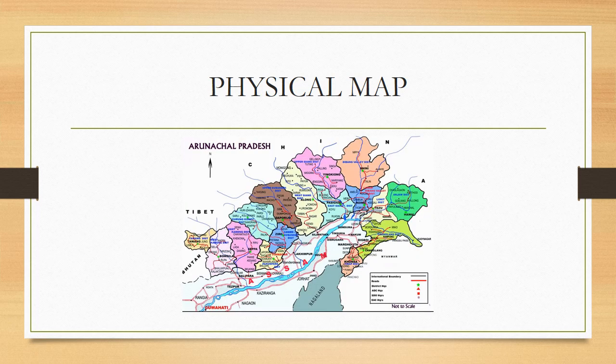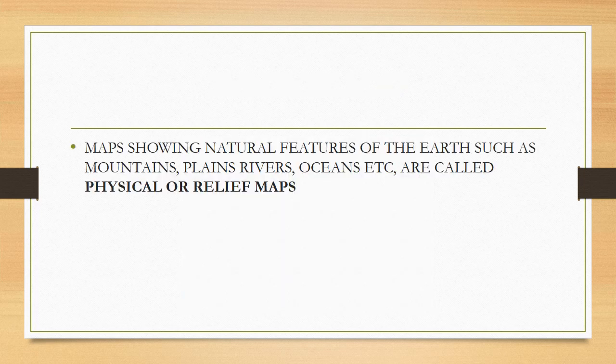This is a physical map. Now we are going to study about different types of maps. Look through this image. Maps showing natural features of the earth such as mountains, plains, rivers, oceans, etc. are called physical or relief maps.